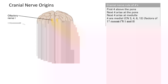Cranial nerves are nerves that emerge directly from the brain, including the brainstem. This is in contrast to spinal nerves, which emerge from segments of your spinal cord. There are 12 cranial nerves that you need to know — 12 in total.